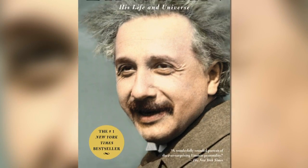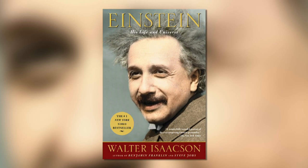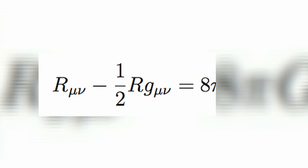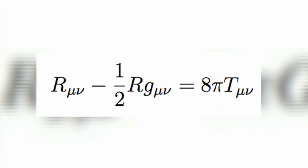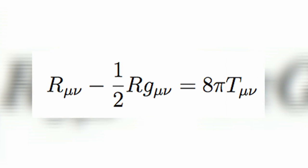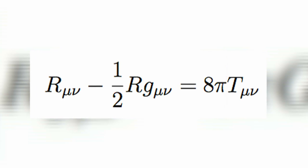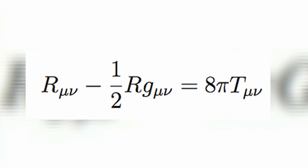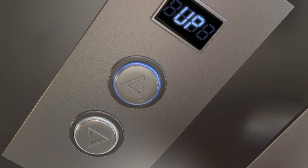He came up with it in 1905. Ten years after doing his special theory of relativity, Einstein in 1915 generalized it to make it apply to everything from accelerated motion and tie it in with gravity. He called it the general theory of relativity, and it's the most beautiful theory in the history of science.